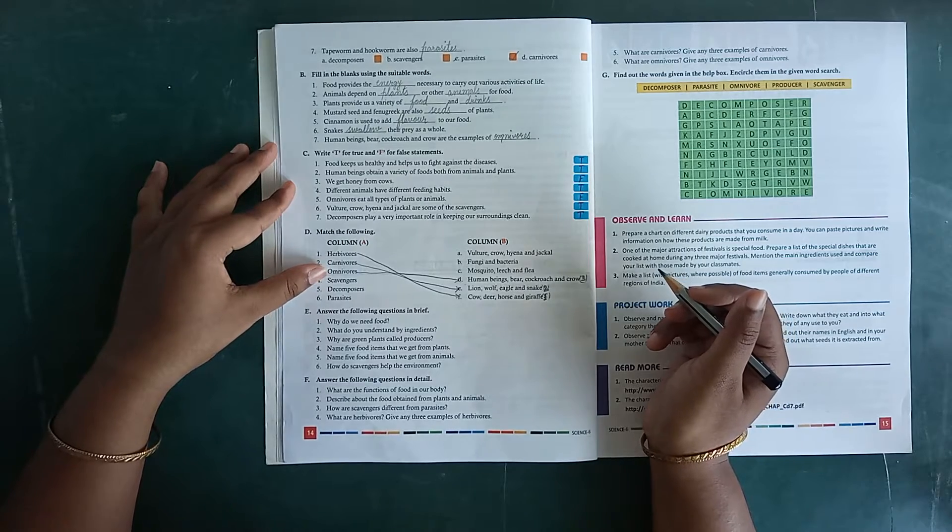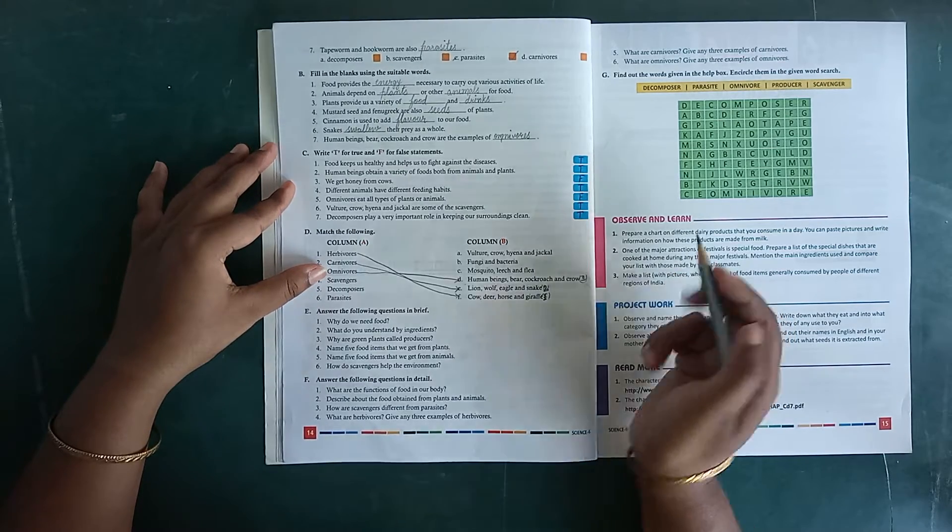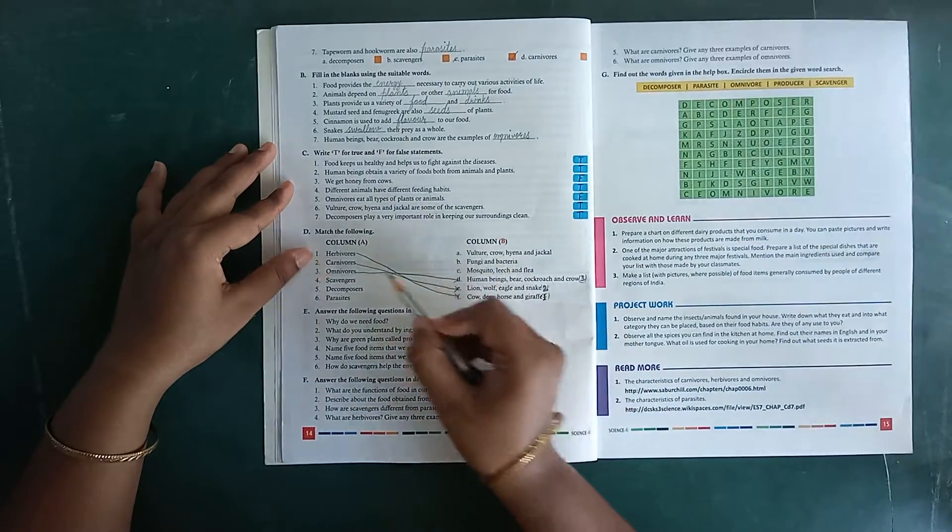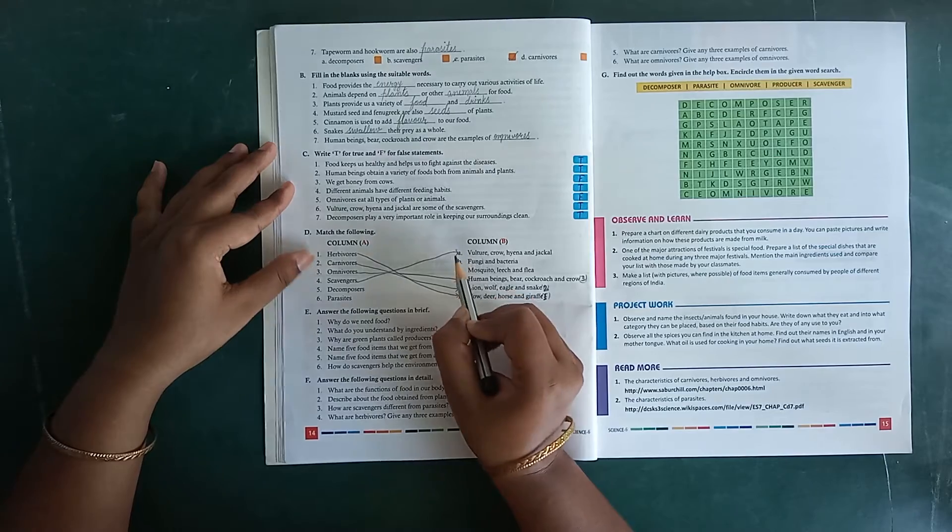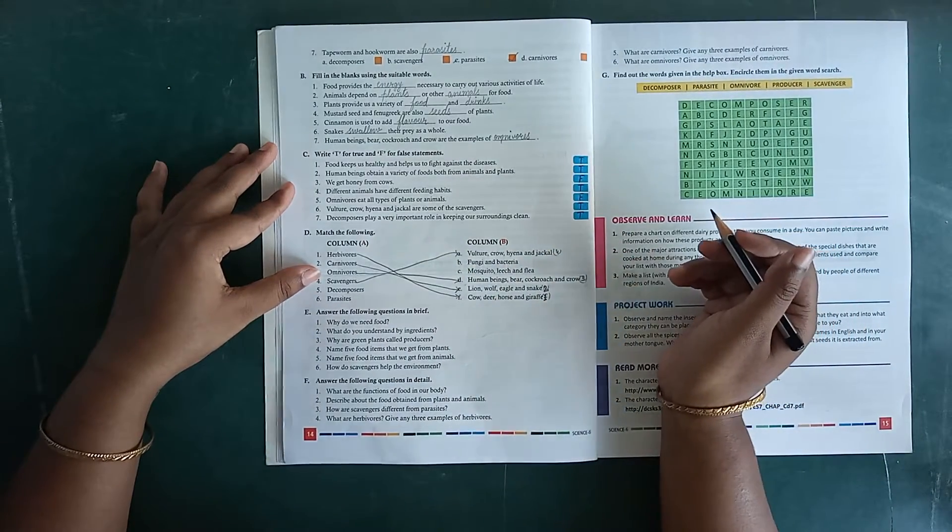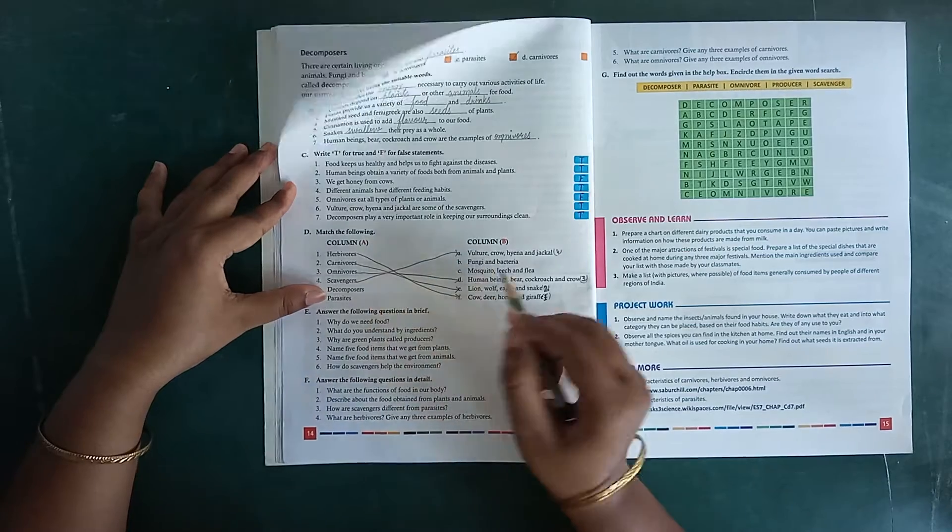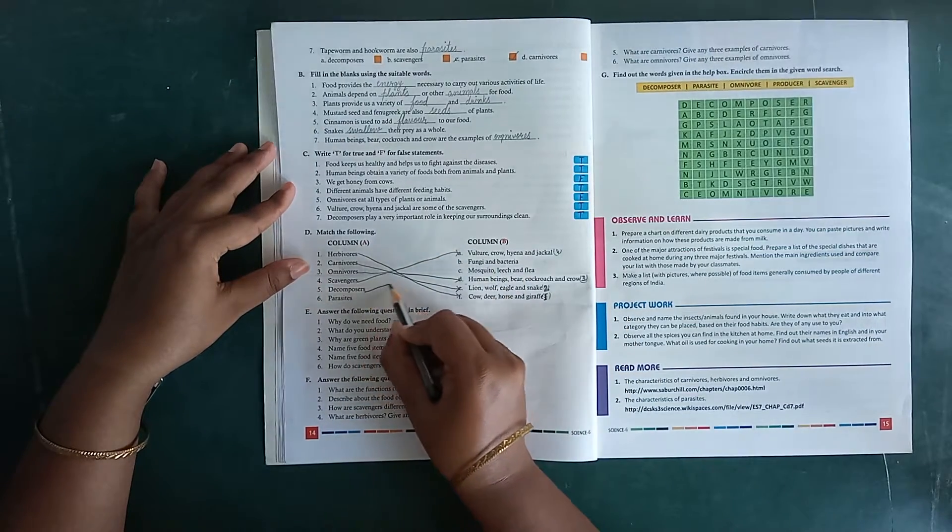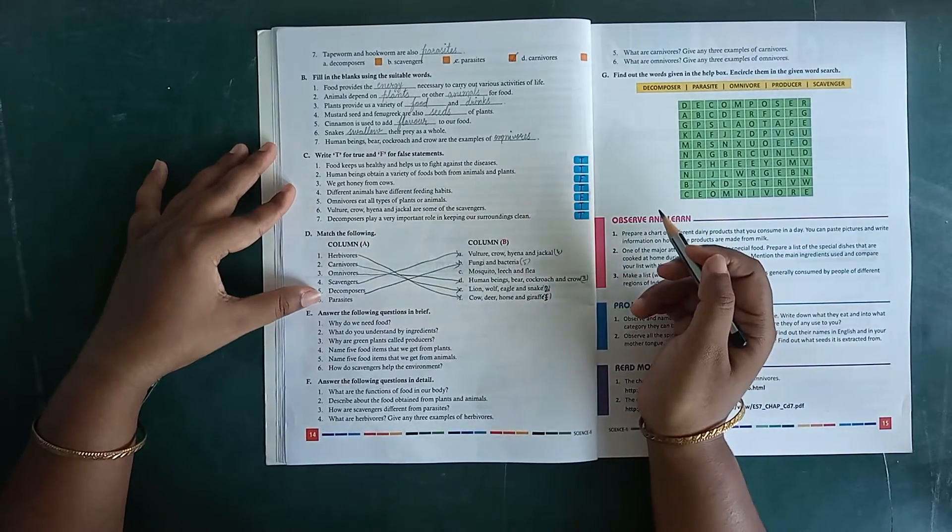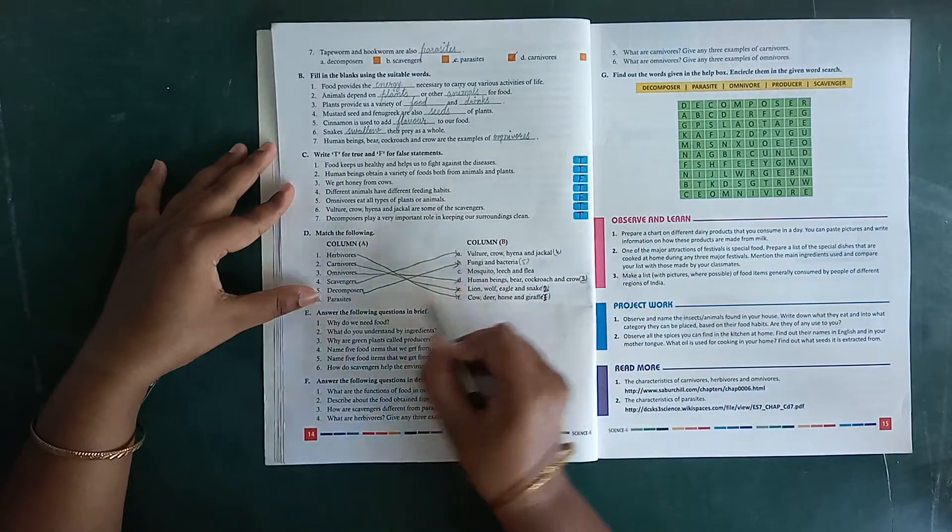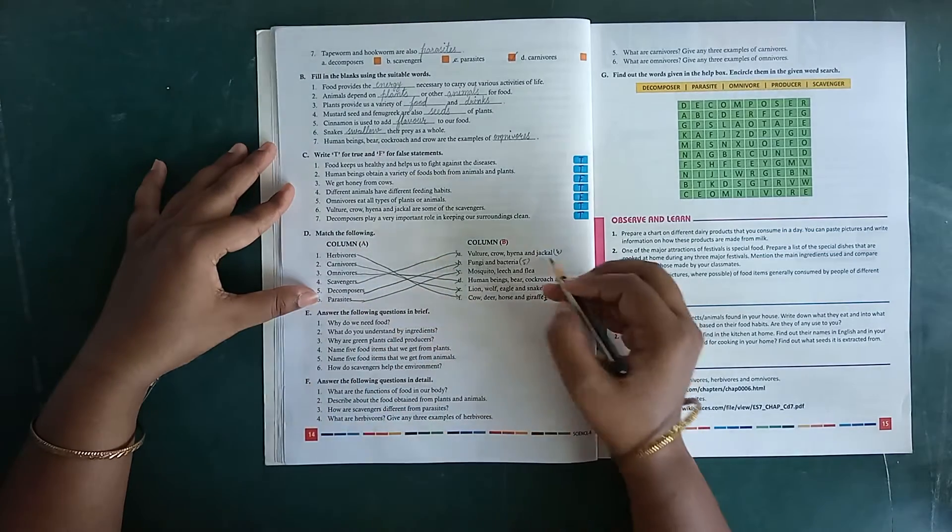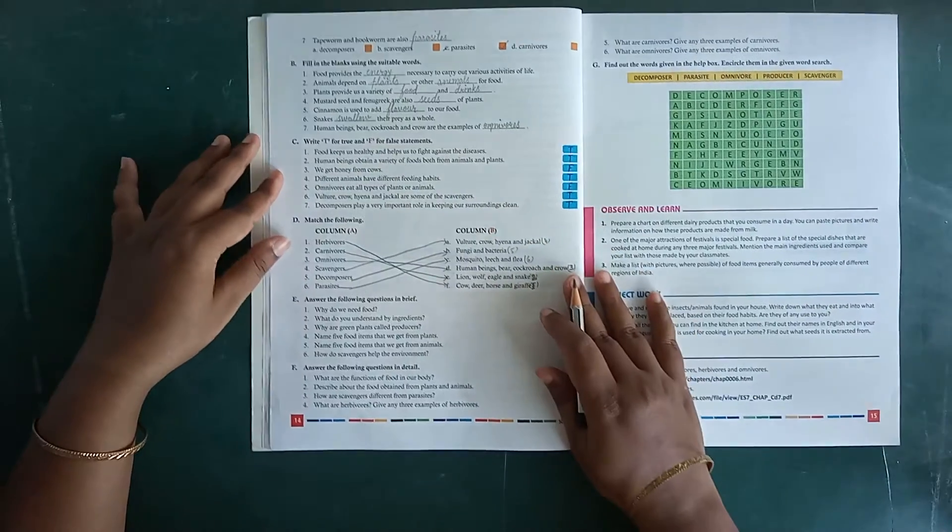Then scavengers. Vulture, crow, hyena and jackal. Here write down number 4. Decomposers, fungi and bacteria. Here I write down number 5. And parasites, the C, mosquito, leech and flea, number 6.